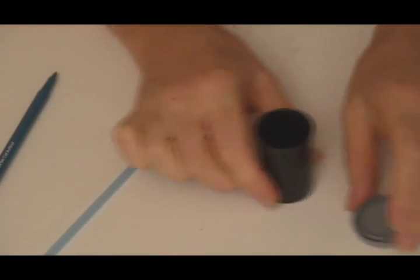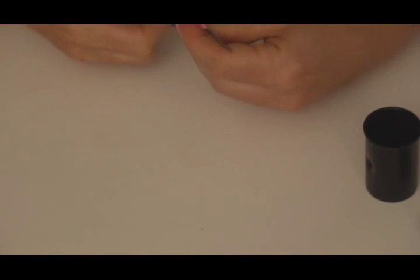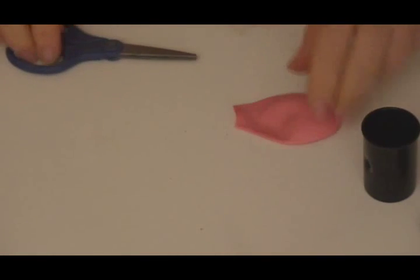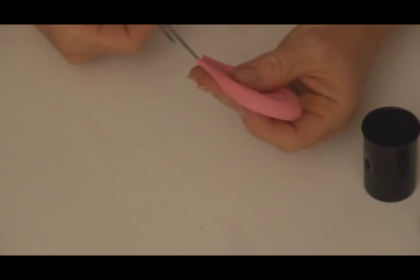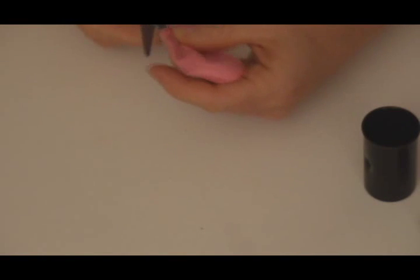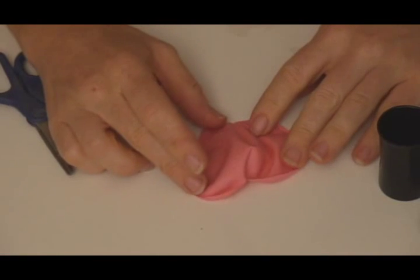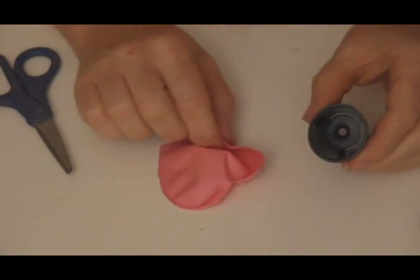Go ahead and take the lid off of your film canister and set the whole thing aside and pull out your balloon. For your balloon you need to cut off the neck of the balloon and throw that away. The next thing you need to do is cut all the way around the balloon. You basically want to open up the balloon and make a big sheet of latex. It doesn't have to be perfect.